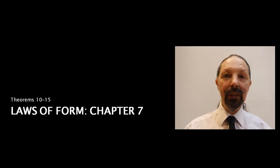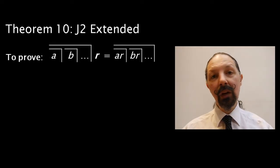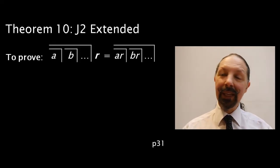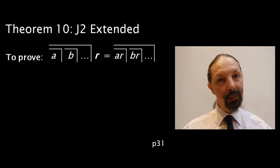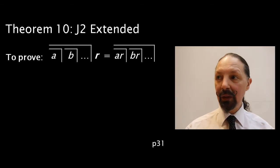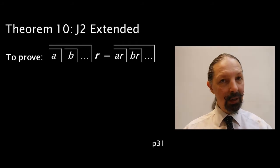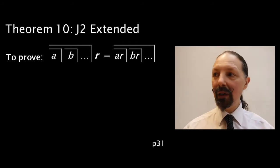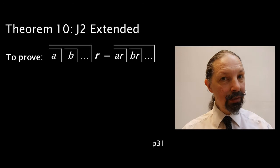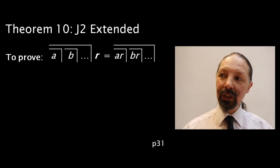First, we start with J2. Now, you know we've been chanting things like A mark B mark mark over 2 R equals A R mark over 2 B R mark over 2 mark over 2. Notice we've changed the terms here.